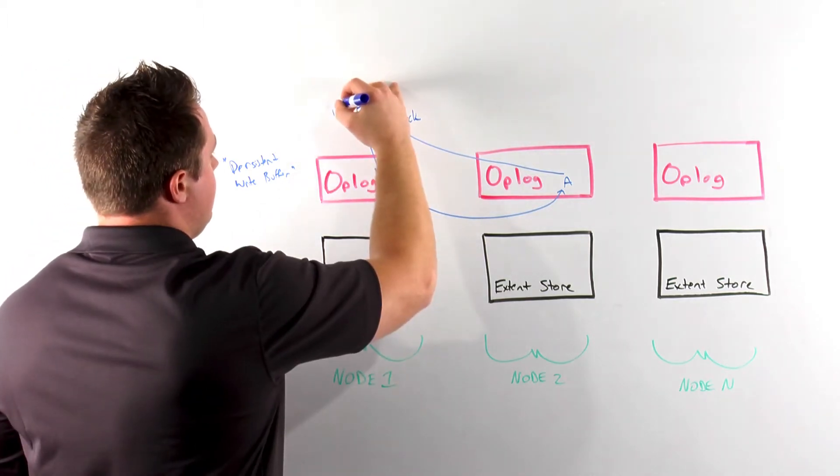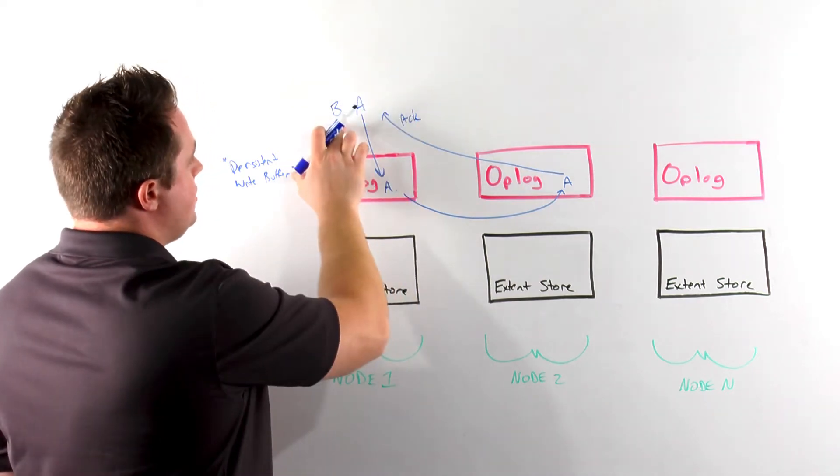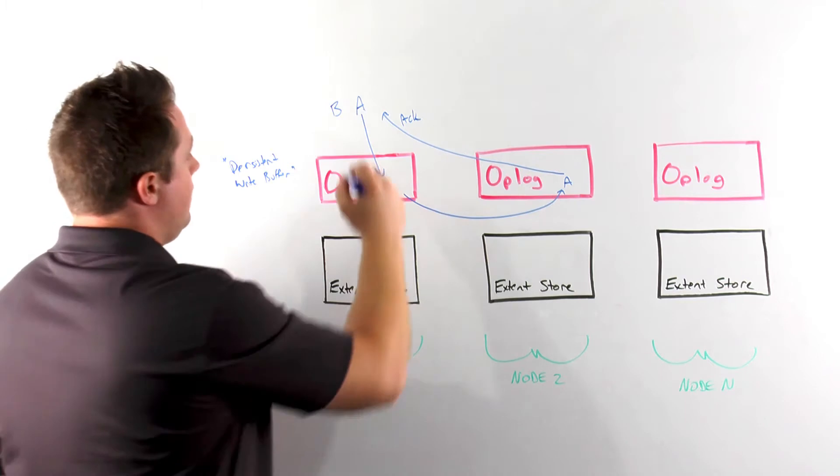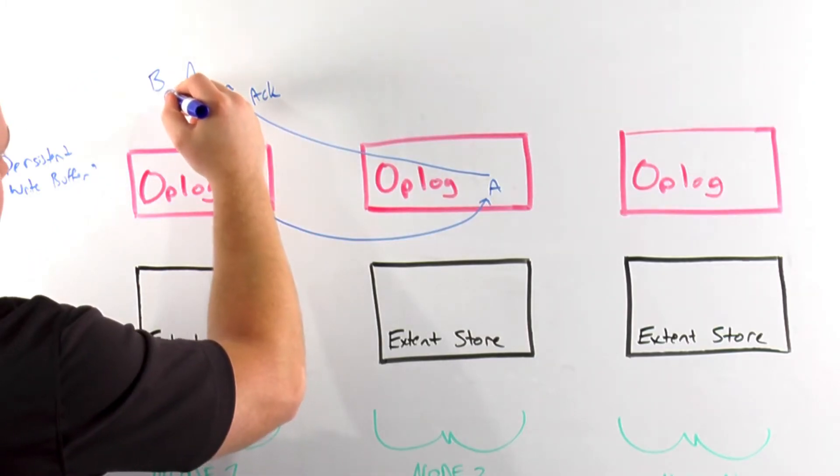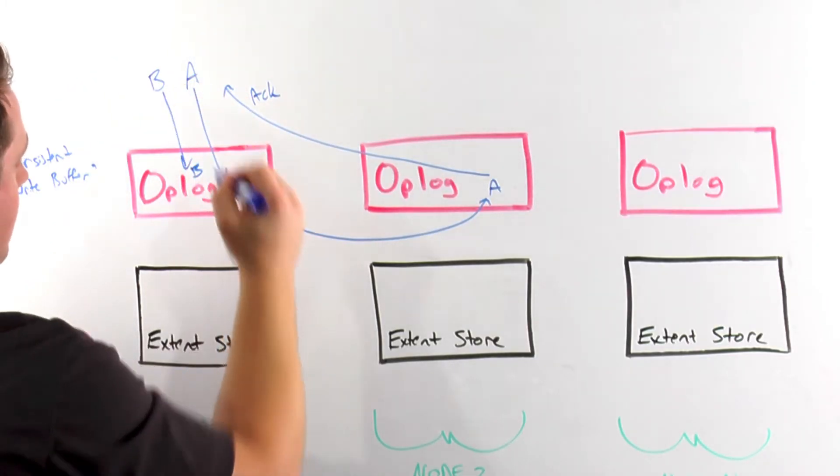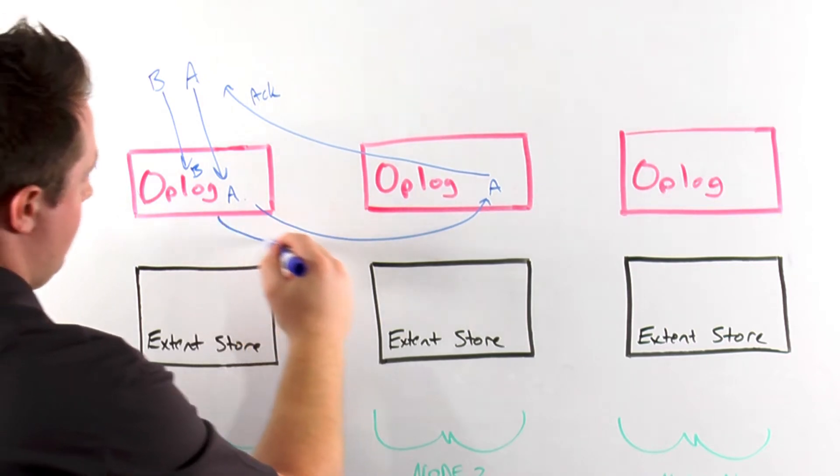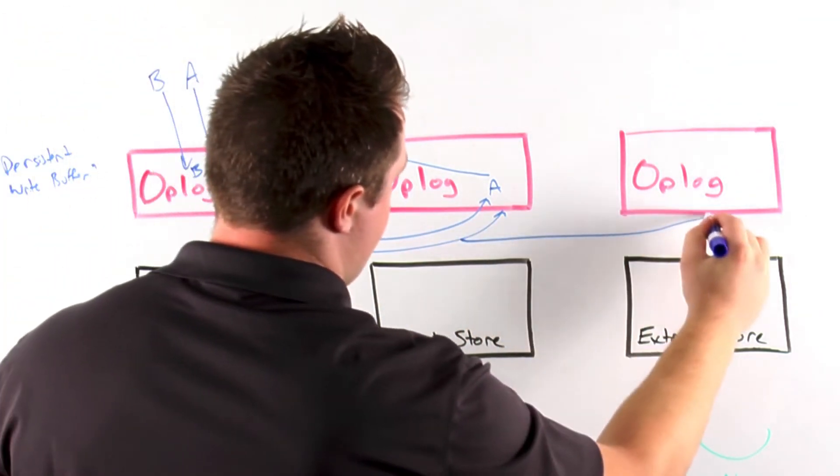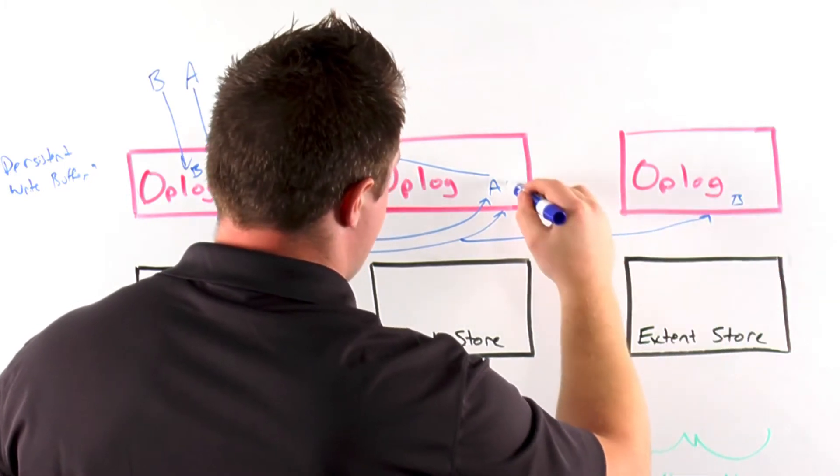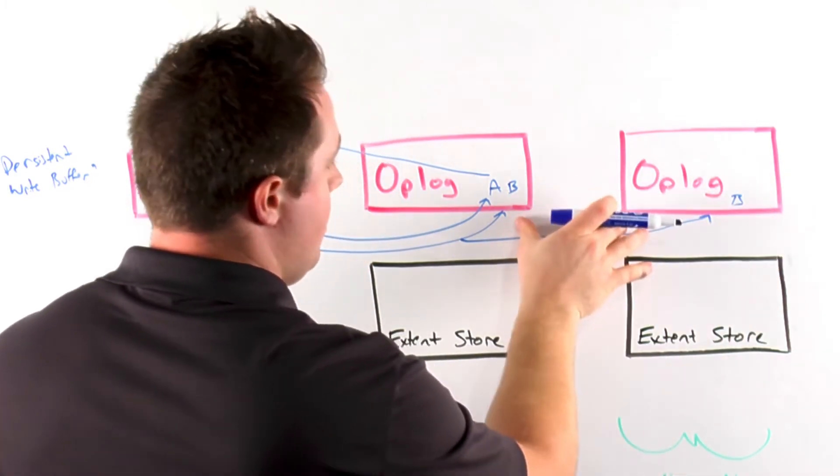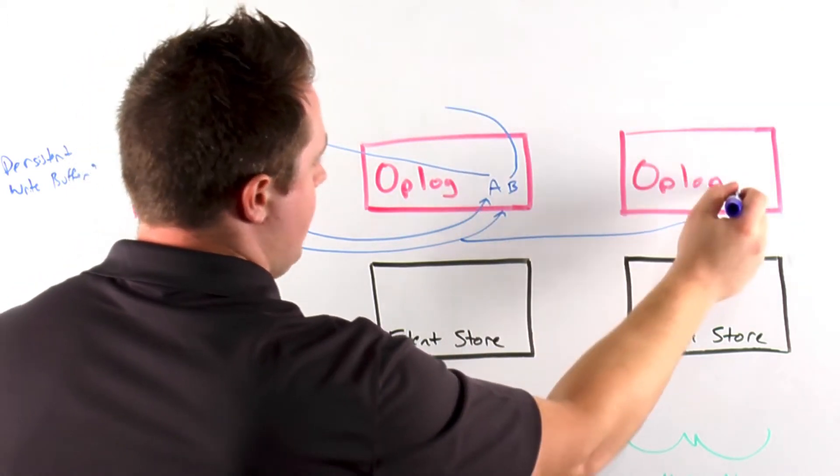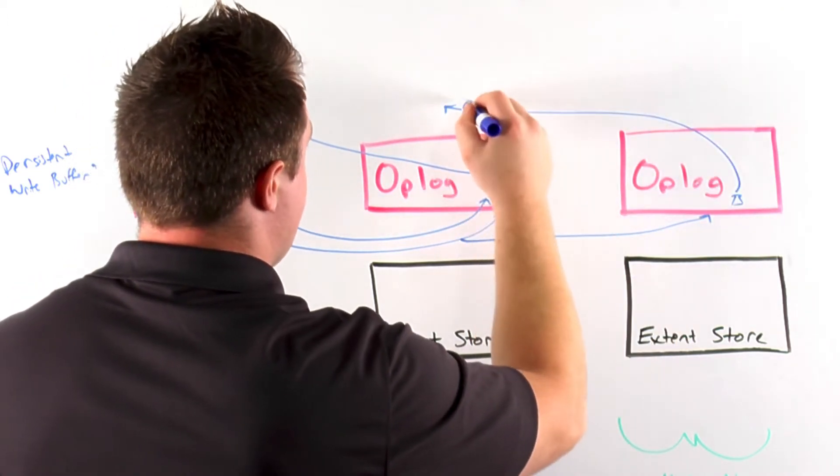However, say for example I write data B, which is configured to be RF3 or N plus 2. Essentially what would happen is it's going to be written to the local op-log, and then synchronously replicated to two op-logs before the actual write is acknowledged. Once both remote op-logs have actually acknowledged the write, then I will come back and actually acknowledge that the write has been completed.